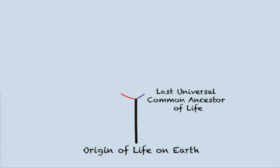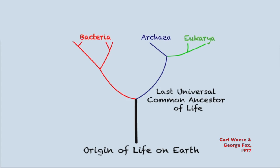The first branching of the Tree of Life created Bacteria and Archaea. Later, a third branch, Eukarya, split off from Archaea.